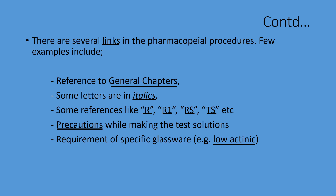General chapters refer to the general test methods used for testing certain parameters. Some letters are in italics, and there is a separate section linked with necessary data. The references like R, R1, RS, TS, etc. are suffixed for several reagents, test solutions, volumetric solutions, etc. There are specific requirements mentioned for each type of reference. You have to use exactly the same quality of reagents, test solutions, etc. In several places, precautions while preparing these solutions must be considered.